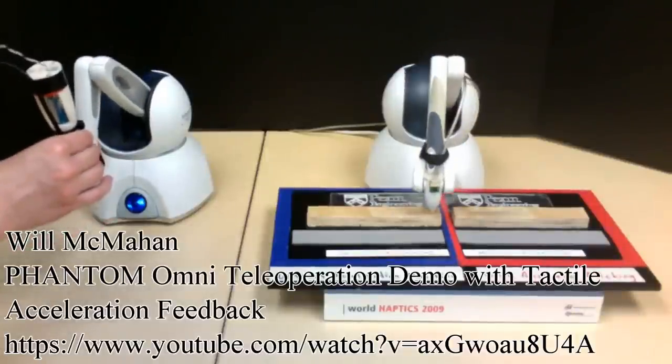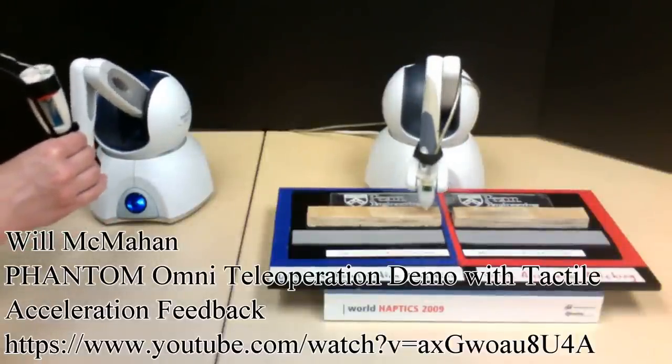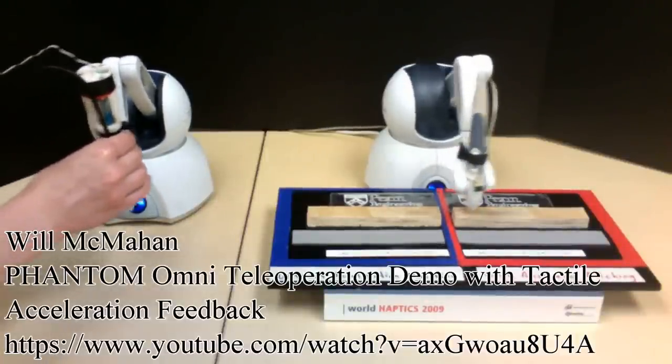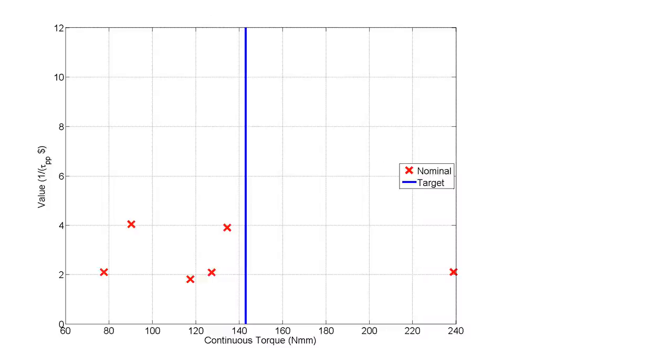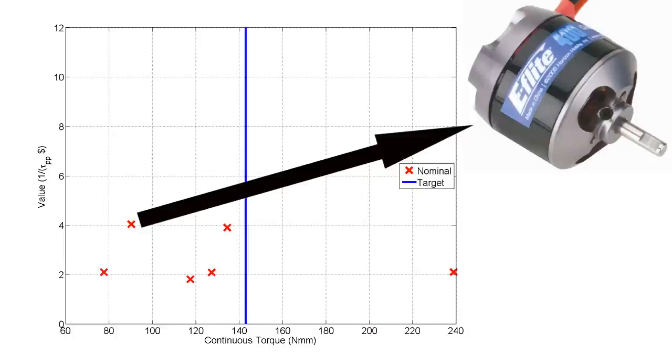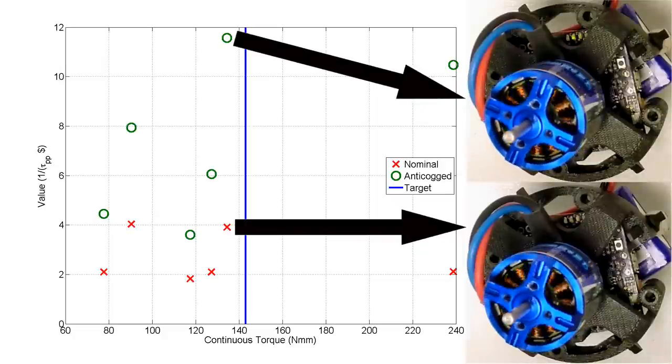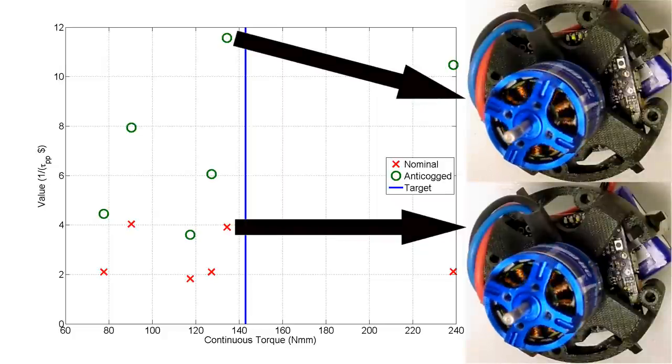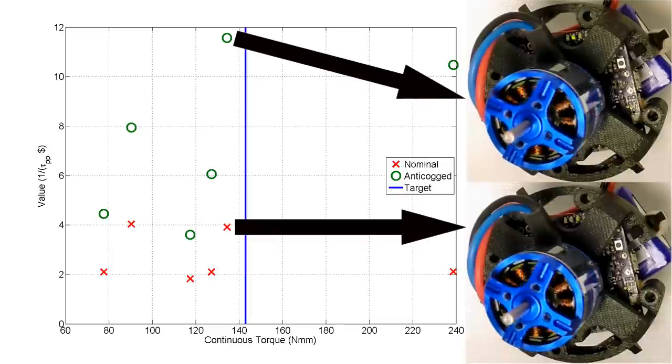To verify that anti-cogging works in robotic applications, we made a robotic arm modeled after a Phantom Omni. We looked at the motors with a torque rating within a factor of 2 of the Phantom Omni's continuous torque, then ranked them by performance and economic value, which we defined as the inverse of peak-to-peak torque ripple times cost. The naturally smooth E-Flight Park 400 has the best value, but after anti-cogging, the naturally rough Exceed RC Rocket 400 has about the same peak-to-peak torque, but only one-third the cost, and was the cheapest tested motor.